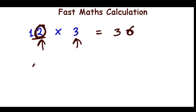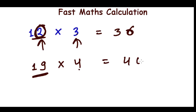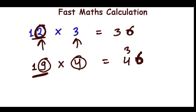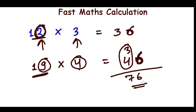Now let's try with bigger numbers — 19 times 4. Again, first imagine 19 as 10. So 10 times 4 is 40. Now 9 times 4 is 36 — that gives us 3 and 6. You always replace the last digit with the last digit of this result, so it becomes 4 plus 3, that's 7, and 6 — the answer is 76.